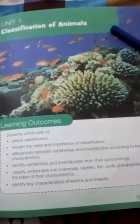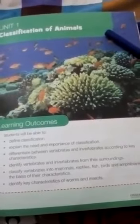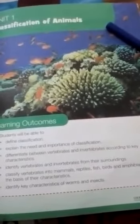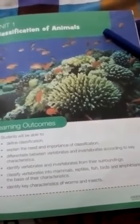I will tell you a summary of what we will learn in this chapter. We will define the classification of animals, which is important. We will discuss about vertebrates and invertebrates, which have been classified in different kingdoms and different organisms. We will also study the characteristics of worms and insects.